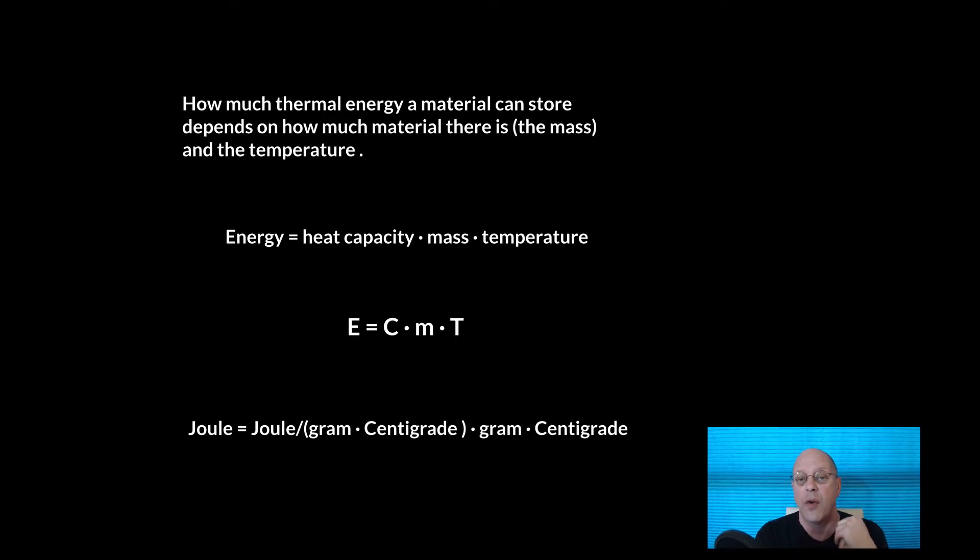And so the formula relating energy, heat capacity, mass and temperature is given in the next line on the slide. So the energy is equal to the heat capacity times the mass times the temperature. Or in symbols, E is equal to C times M times T. So E is the energy, C is the universal symbol, large capital C is the standard notation for the heat capacity. M is a measure of the mass and T is the temperature.